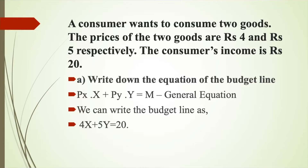Part A of the question is: write down the equation of the budget line. The equation of the budget line is Px × x + Py × y = M, where Px and Py are the prices of x and y respectively, x and y are the quantities consumed of good 1 and good 2, and M is the consumer's income. We can write the budget line as 4x + 5y = 20, where 4 is the price of good 1 and 5 is the price of good 2.